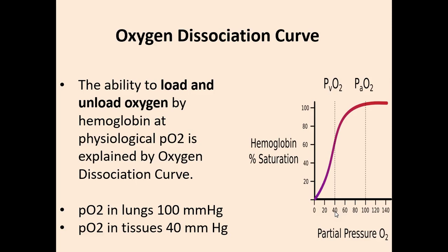Hemoglobin must also release oxygen in tissues where the partial pressure of oxygen is very low, i.e. 40 mmHg. The sigmoidal shape of the oxygen dissociation curve for hemoglobin is due to the allosteric effect, or cooperativity. Cooperativity means the binding of the first oxygen molecule to hemoglobin increases the affinity of the remaining subunits for oxygen. This occurs because hemoglobin changes its conformation from the tense state to the relaxed state as oxygen binds.